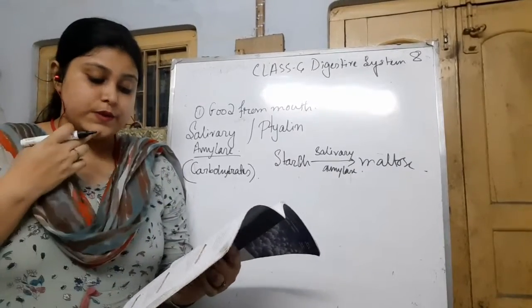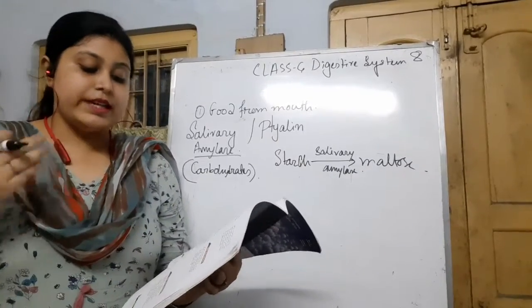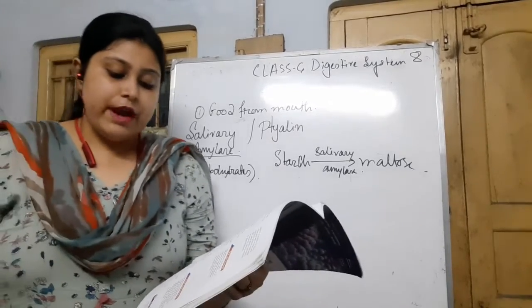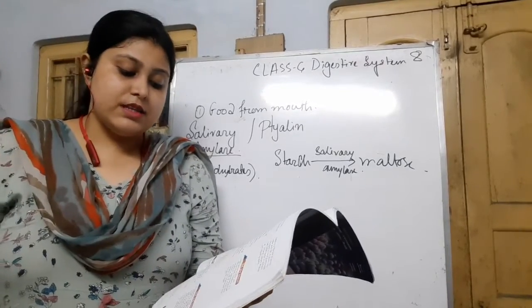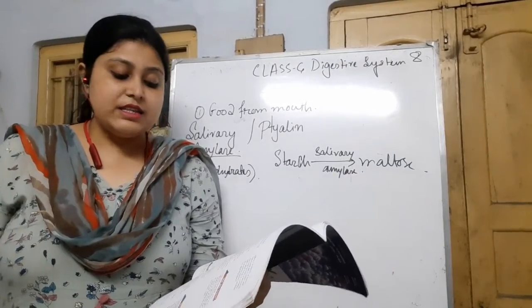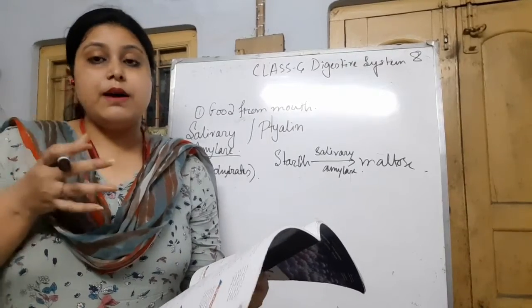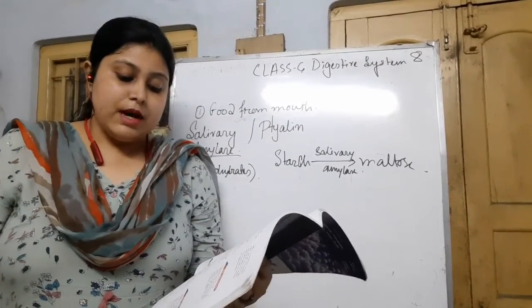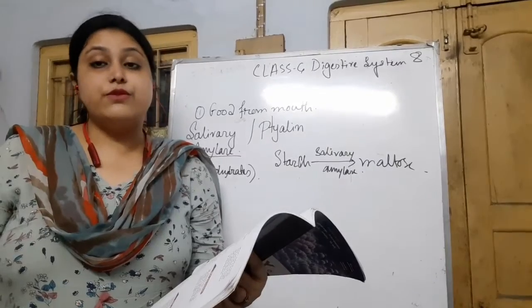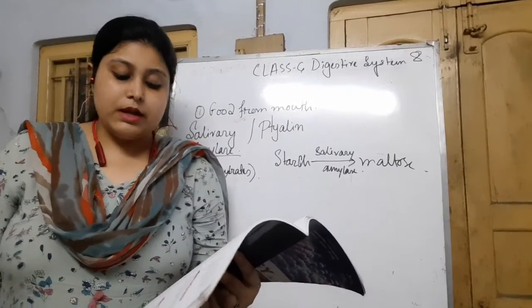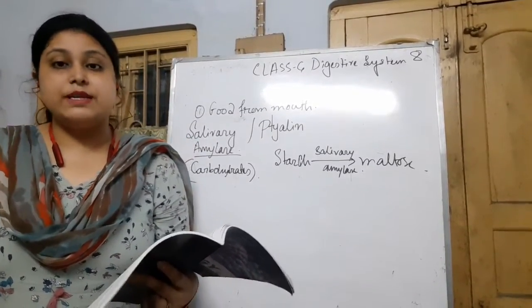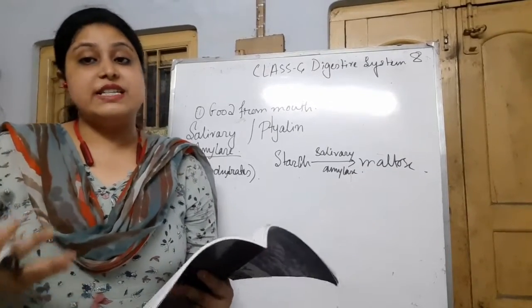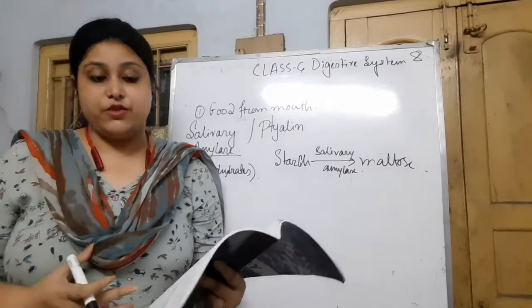After this, the softened food goes to the next part called the pharynx, and the food is swallowed into the pharynx and then passes through the esophagus. The pharynx is only the middle part between the mouth and the esophagus, and the muscles of the esophagus push the food downwards to the stomach. No digestion takes place here because there are no digestive juices or enzymes present in the pharynx and esophagus.